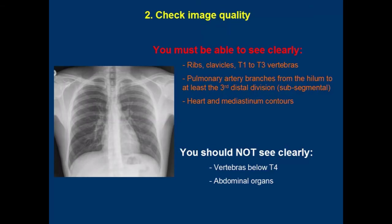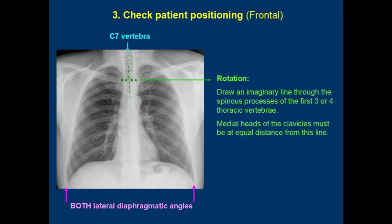2. Check image quality. You must be able to see clearly the ribs, clavicles, T1 to T3 vertebra, pulmonary artery branches at least to the third distal division, and the heart and mediastinum contours. You should not see clearly thoracic vertebra below T4 or any structures below the diaphragm.